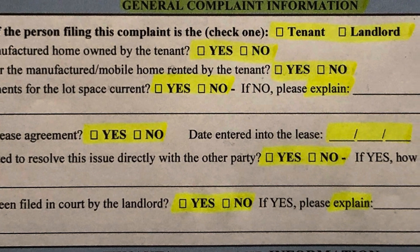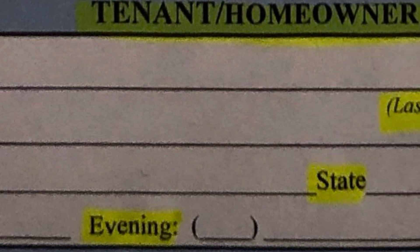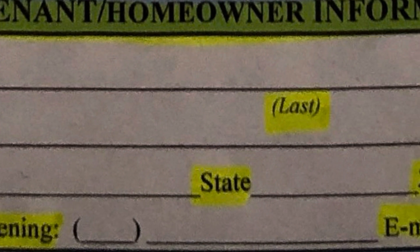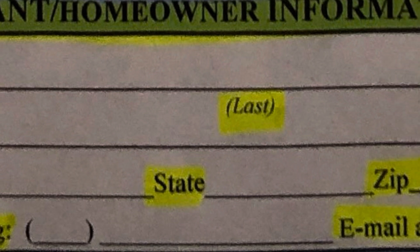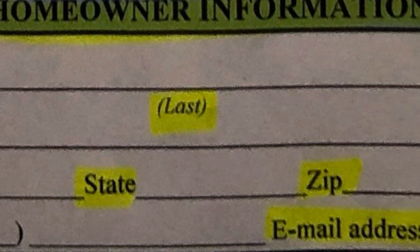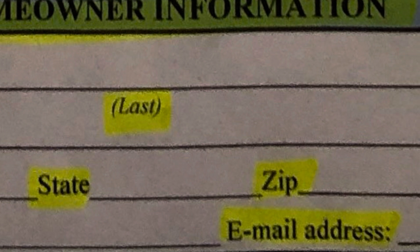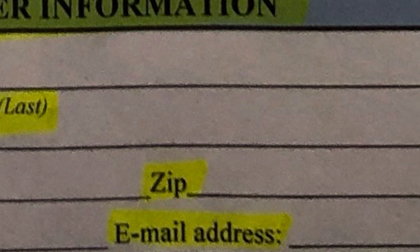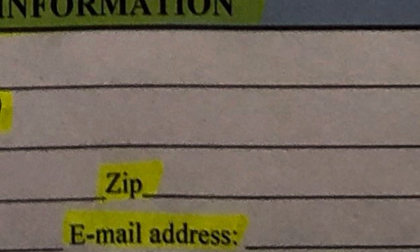Let's move on to the tenant-homeowner information. Enter your first name, last name, and middle initial if you have one. Every person has to file individually, but if you are husband and wife living at the same address, only one of you needs to file. Put your name, address, city, state, and zip code. Fill in a day phone, evening phone, and your email address.